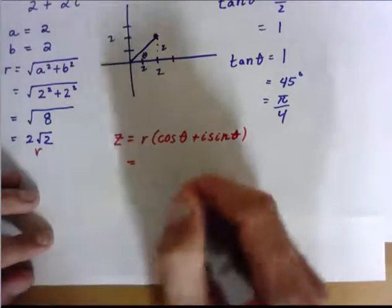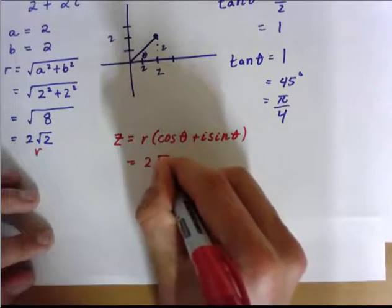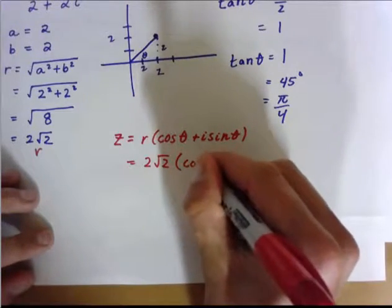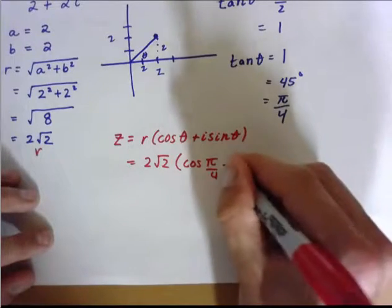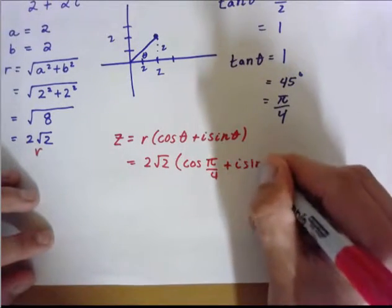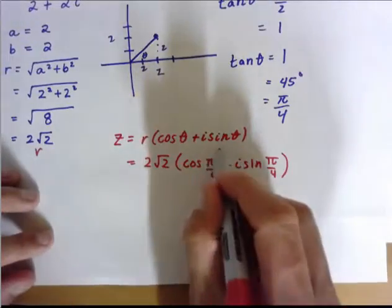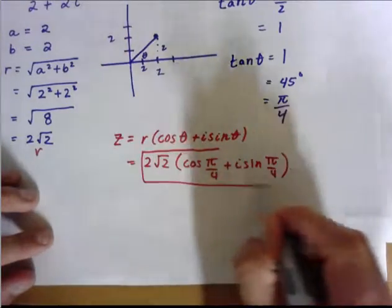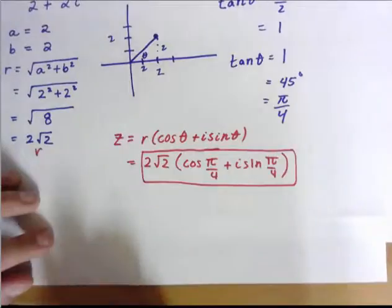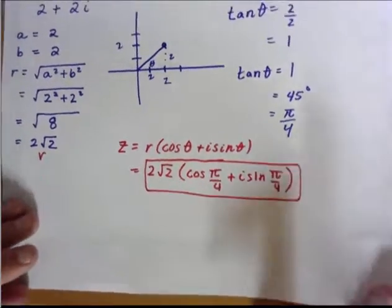Here's r, 2 root 2 times the quantity cosine of, I use radians, pi over 4 plus i sine of pi over 4. And that is our complex number written as a polar equation or a polar expression.